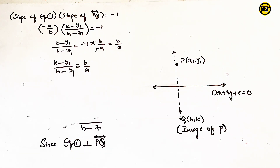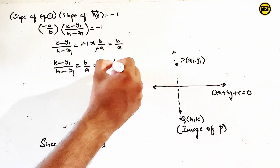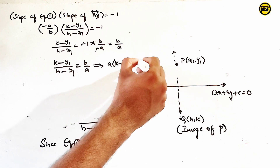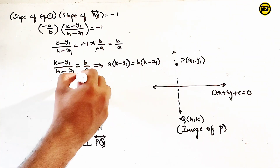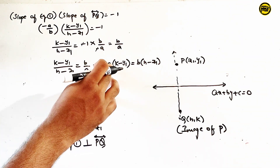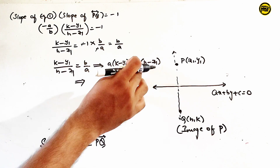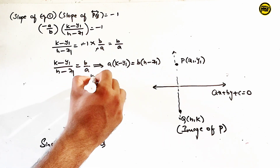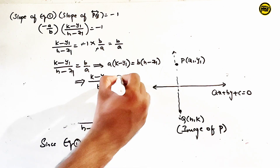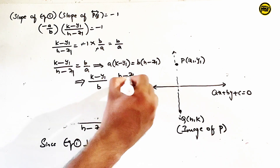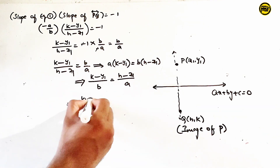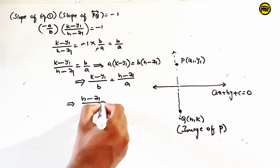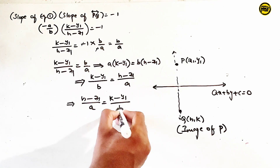Now by cross multiplication, h minus x1 by a equals k minus y1 by b. Let this common value equal t. So h minus x1 by a equals k minus y1 by b equals t. This is our condition — a key boxed result.